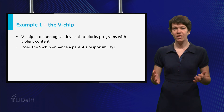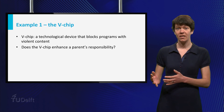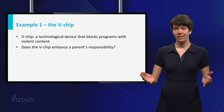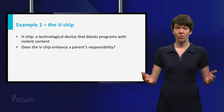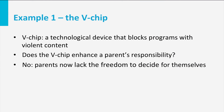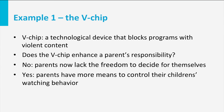Some people say that by using the V-chip, parents transfer responsibility to the TV stations, because they let the TV stations decide on the exact rating per program, and thereby on the question whether this program will be shown on their television at home or not. As such, the V-chip seems to limit the freedom of parents. However, other people say the V-chip provides the parents with more information on violent content, and as such it gives them more freedom to check what their children actually watch. Whether the V-chip limits or enhances the parent's responsibility is open for discussion, but the example clearly shows that technology can and does affect a person's responsibility.